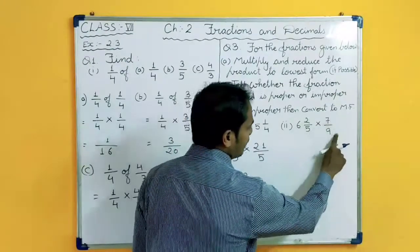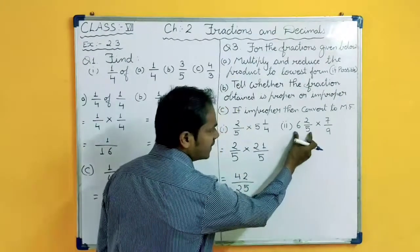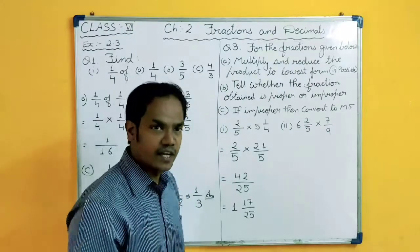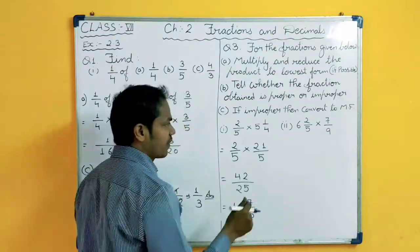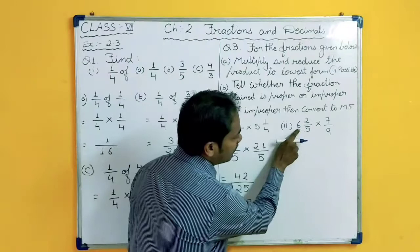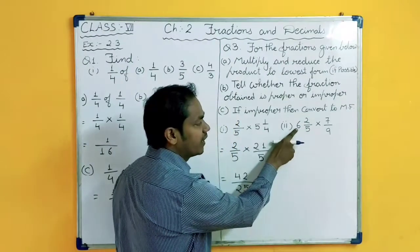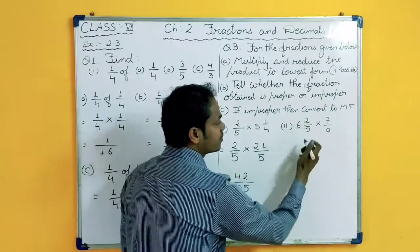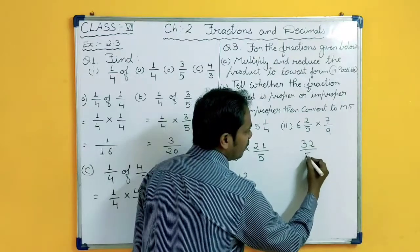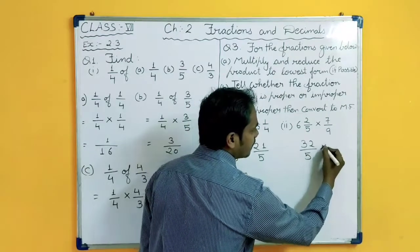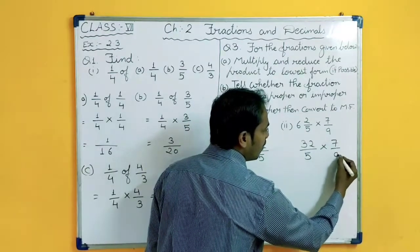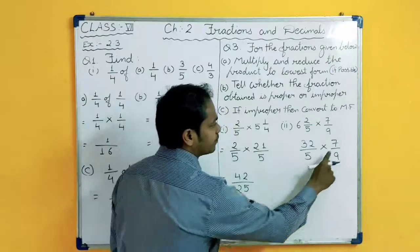Next: 6 and 2 upon 5 multiplied by 7 upon 9. This is a mixed fraction, so we will change this mixed fraction into an improper fraction first. How to change? 5 multiplied by 6 is 30, plus 2 is 32. So 32 upon 5 multiplied by 7 upon 9. Now we will multiply: 7 times 32 is 224 and 5 times 9 is 45.